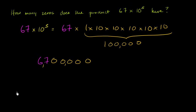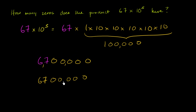Another way you could think about it: this is the same thing as 67 times 100,000. So it's 67 followed by five zeros — 1, 2, 3, 4, 5 — and you get the exact same value.